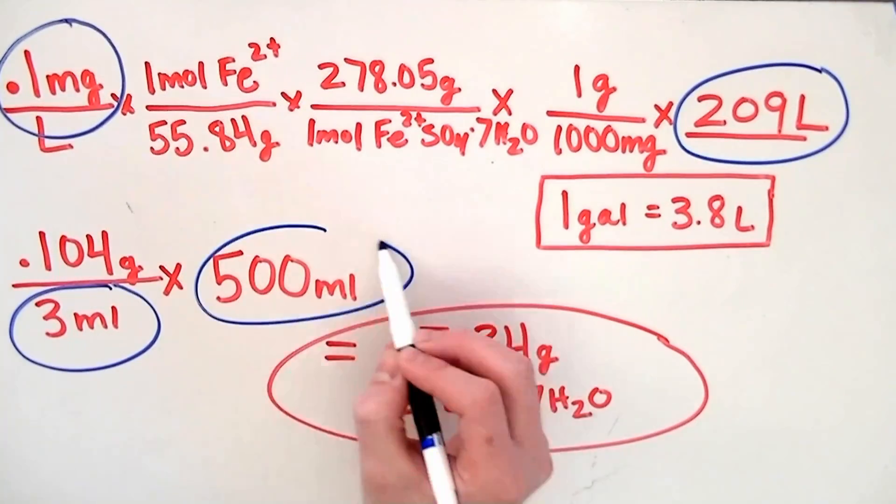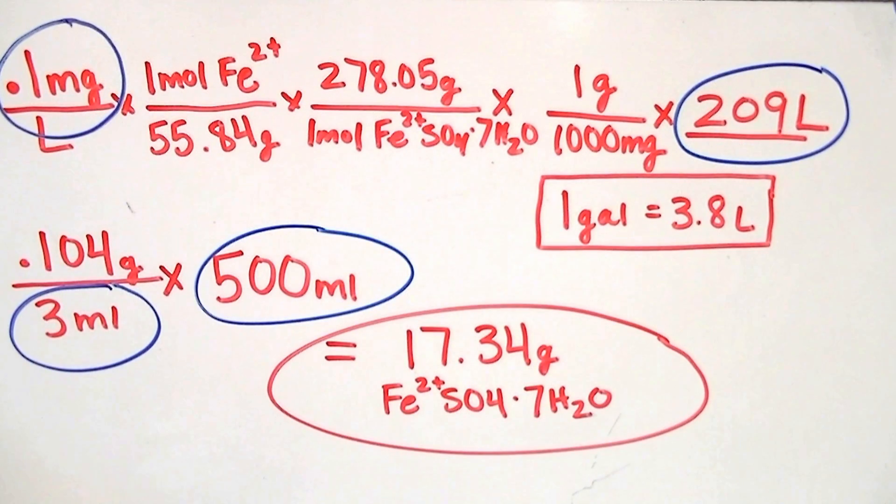The last number we can change is the volume of our fertilizer container. For example, if you were using a 1.0 liter bottle to house your solution, you would write down 1,000 mL. If you don't feel comfortable doing these calculations, or you just want to double-check your work, we've posted a link in the description to a fertilizer calculator that'll do the math for you.